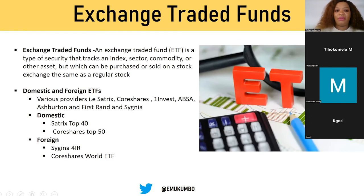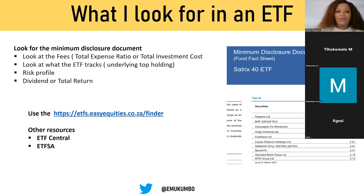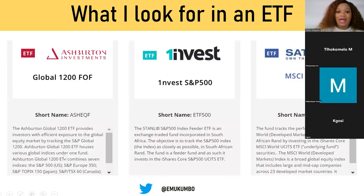Exchange-traded funds — I like to think of them as a basket of shares. Your Satrix Top 40 holds the top 40 listed companies. You get domestic ETFs like the Satrix Top 40, and foreign ETFs like Sygnia Itrix or CoreShares Worldwide — a World ETF is more global. What I look for in ETFs: the fees, which is the total expense ratio or total investment cost, and what the ETF is tracking — what are the constituents or securities held in that particular ETF.